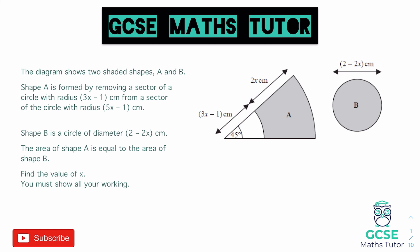So first things first, let's read this question. It says the diagram shows two shaded shapes A and B. Shape A is formed by removing a sector of a circle with radius 3x minus 1 from a sector of the circle with radius 5x minus 1. We can see that shape A is a sector of a circle with a 45 degree angle. Shape B is a circle of diameter 2 minus 2x. The area of shape A is equal to the area of shape B. Find the value of x and you must show your working.